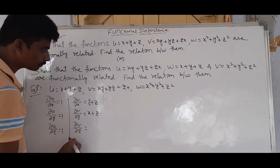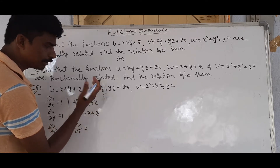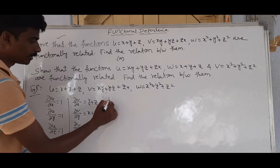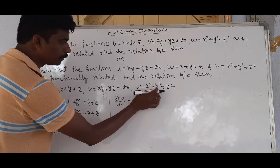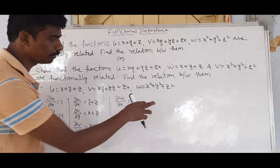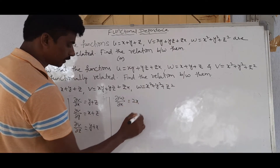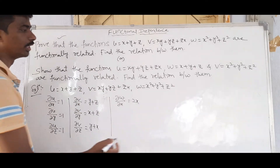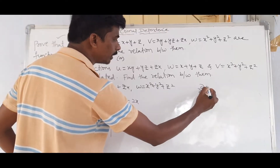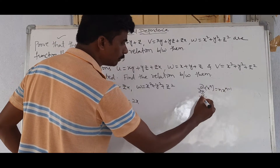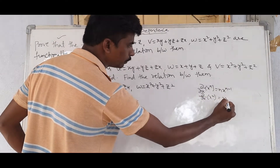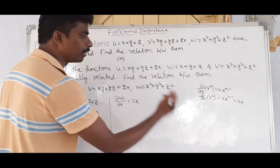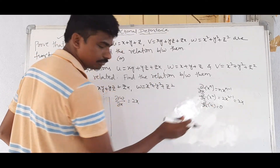Continuing: ∂v/∂z = y + x. For w = x² + y² + z², we use the basic formula ∂/∂x (xⁿ) = n·xⁿ⁻¹. So ∂w/∂x = 2x. Also, ∂/∂x of a constant k equals 0. These are basic differentiation formulas.